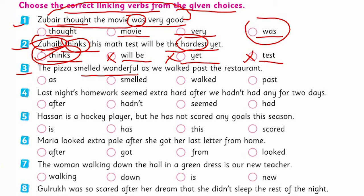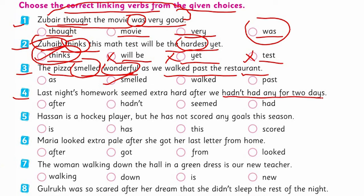The third one: 'The pizza smelled wonderful as we walked past the restaurant.' Pizza is the noun, wonderful is the adjective. What is connecting them? 'Smelled' is the linking verb here. Because we don't have been, being, was, were, or is in that sentence, 'smelled' acts as the linking verb. So 'smell' is the right option here.